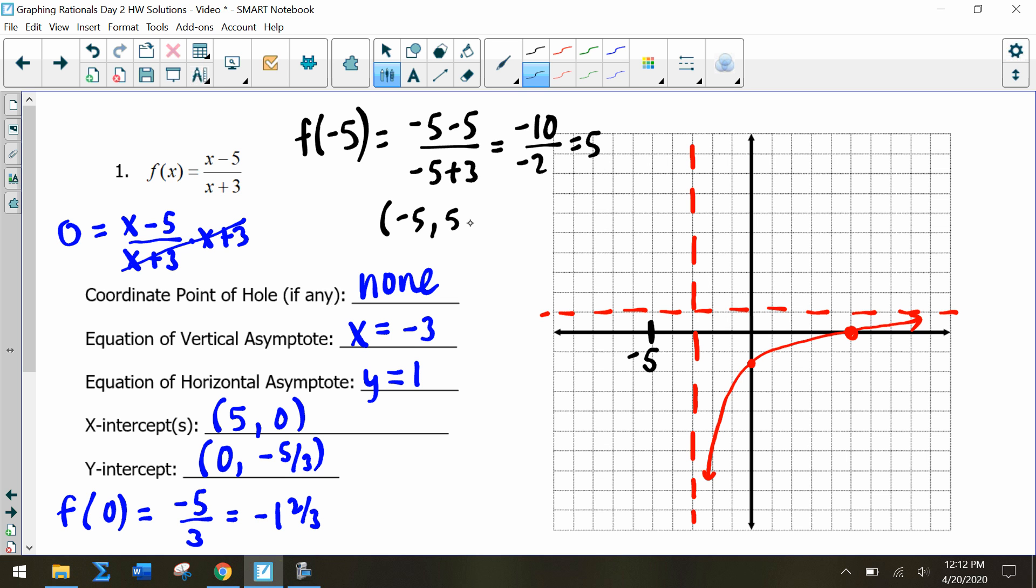So we have another point on the graph at (-5, 5). One, two, three, four, five. Now that we know the graph looks like this, we can plot the rest of that rational. That whole picture is the equation of that rational function.